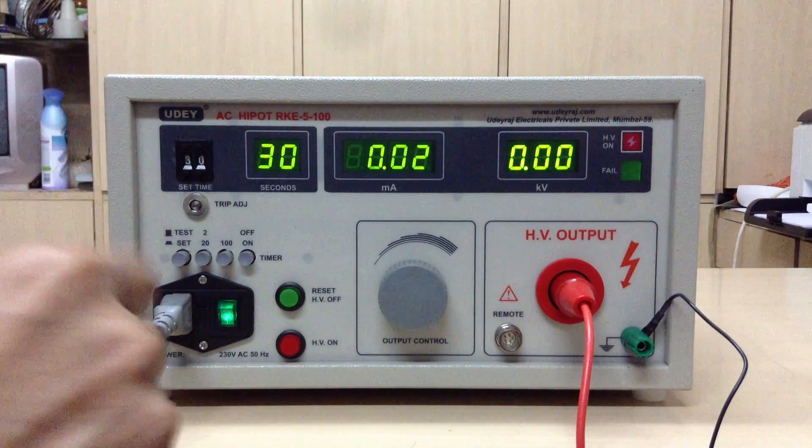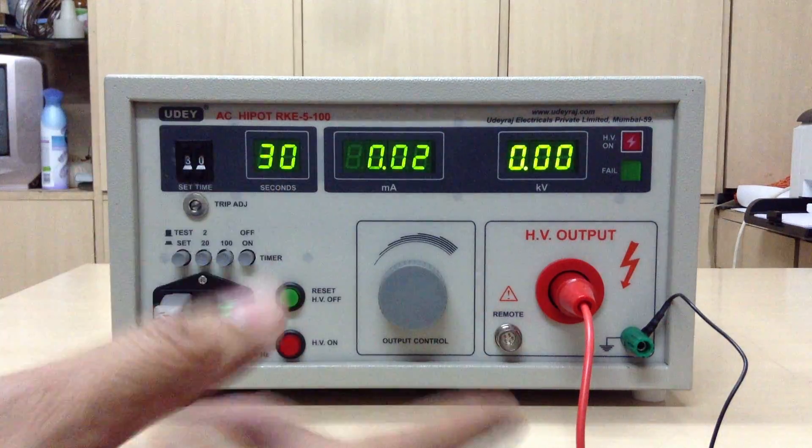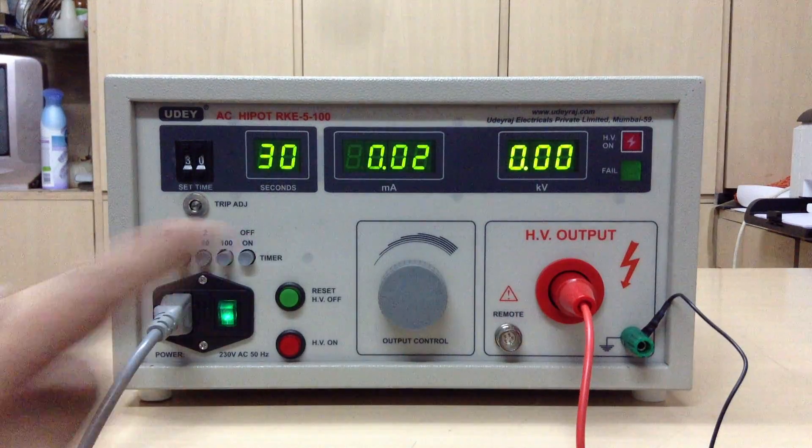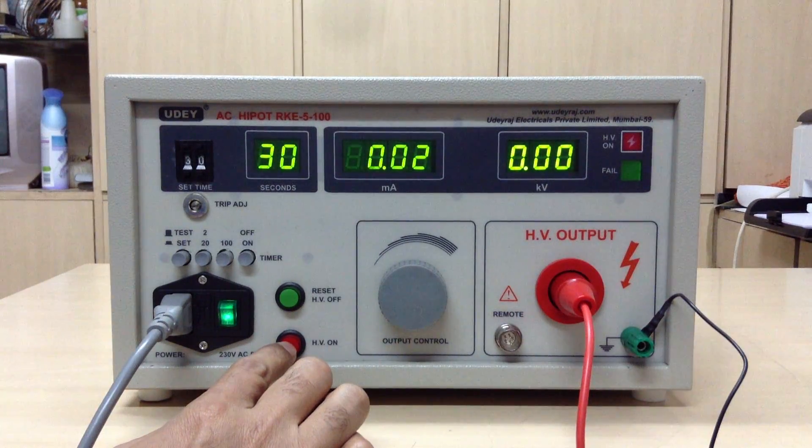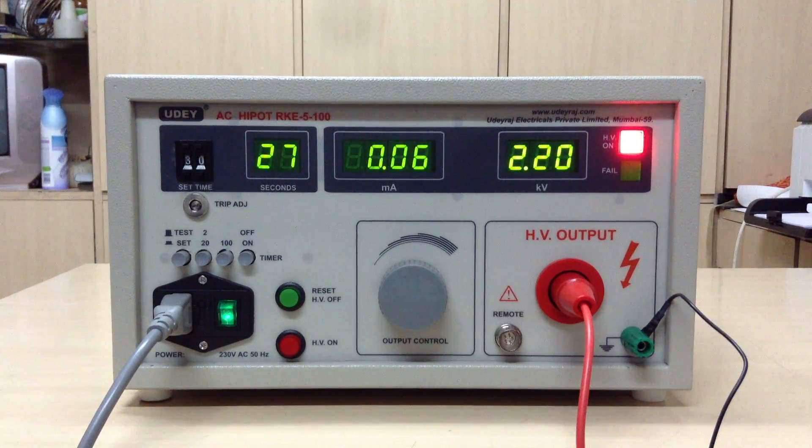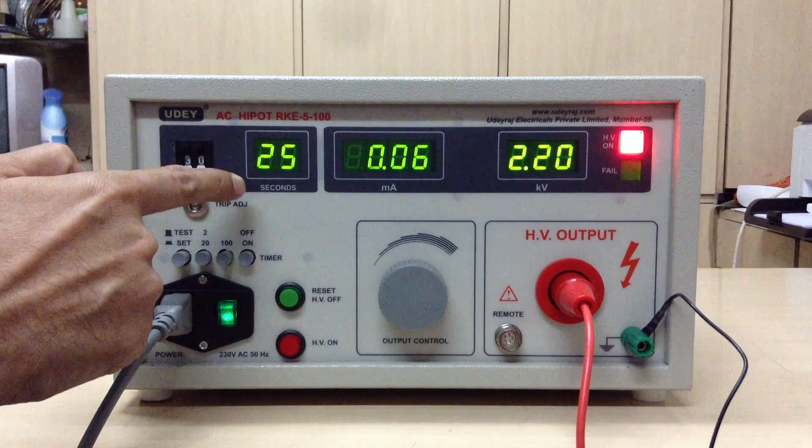On test mode now you can connect the object or item under test with the HV and the earthing lead, and then just need to press the HV ON. It will automatically go to 2.2 kV which was selected by us and the timer gets ON.